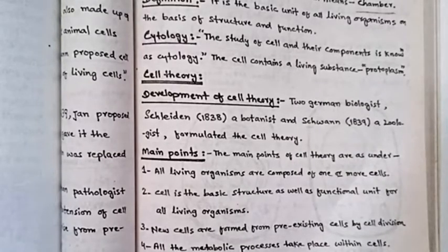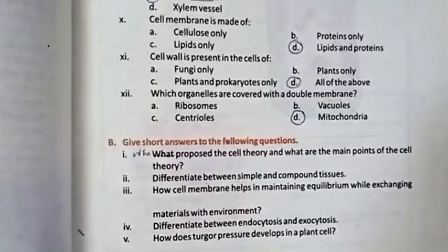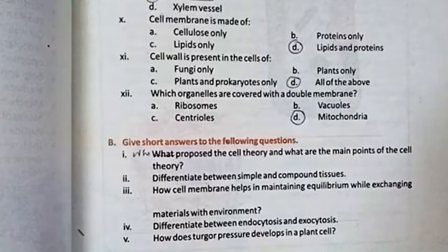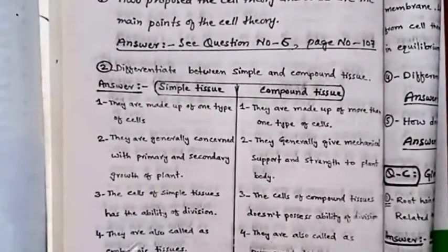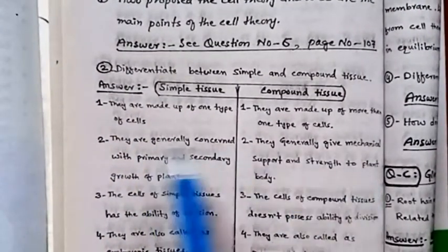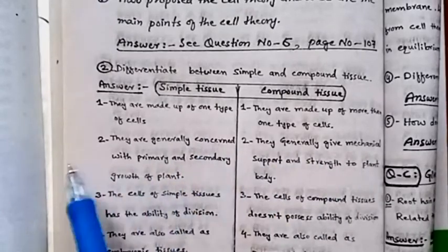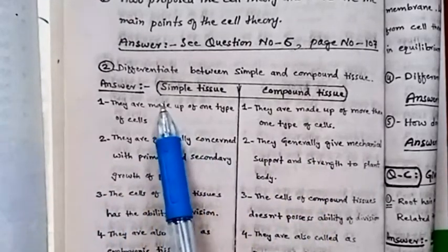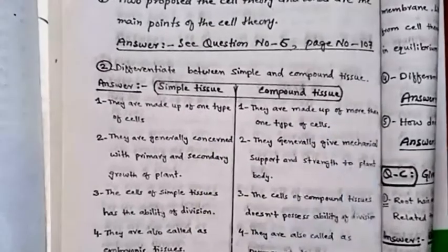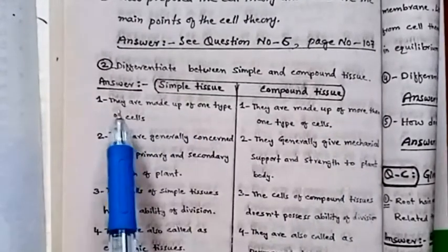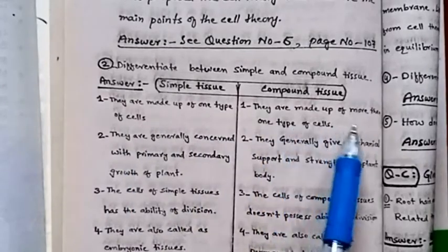Question number 2: Differentiate between simple and compound tissues. Simple tissues are made up of one type of cell.